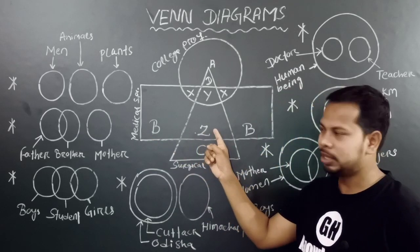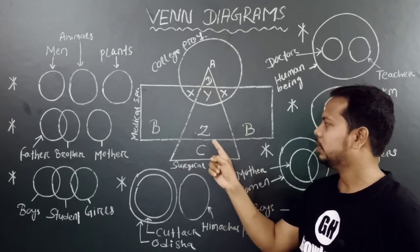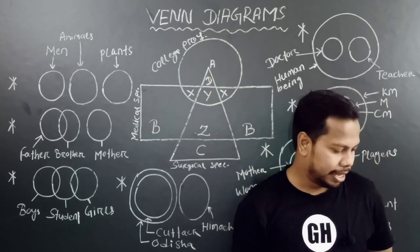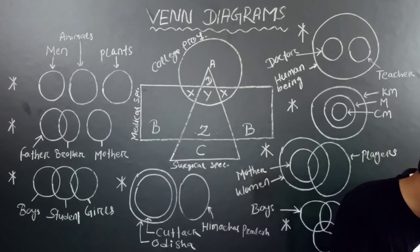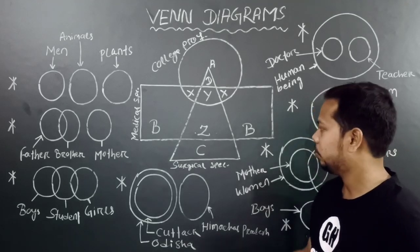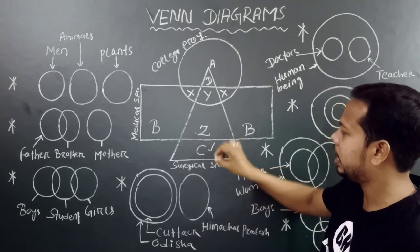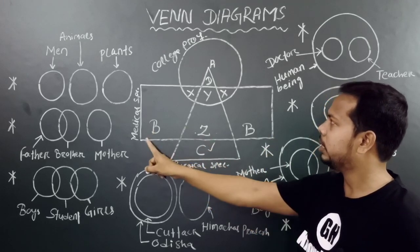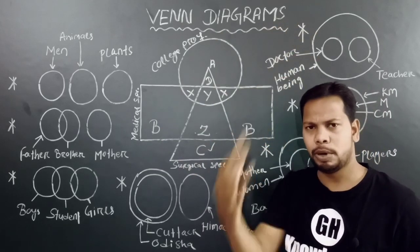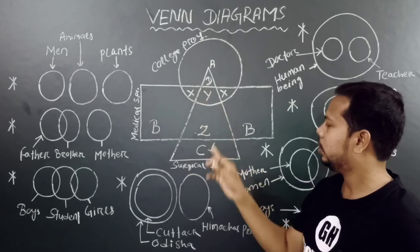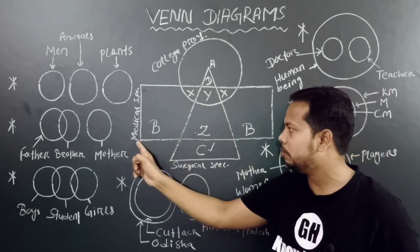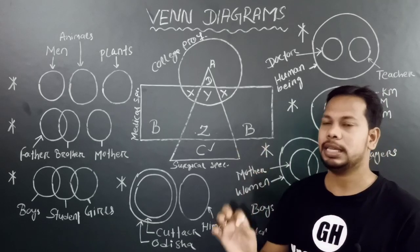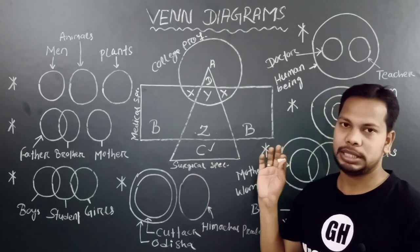C represents surgical specialist, neither medical specialist nor college professor. C represents surgical specialist who cannot represent college professor. C represents surgical specialist.